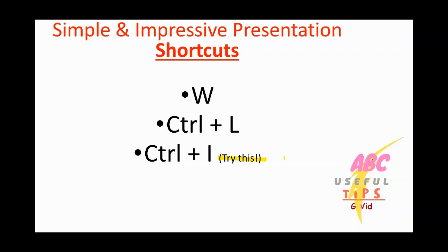Next is Ctrl+P, which allows you to write on the screen directly. Press Control and P at the same time and your cursor will be turned into a pen.